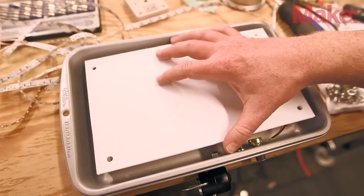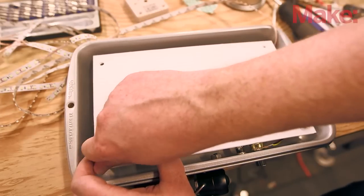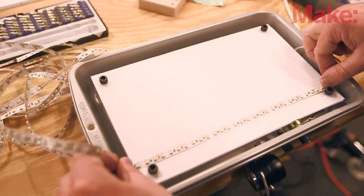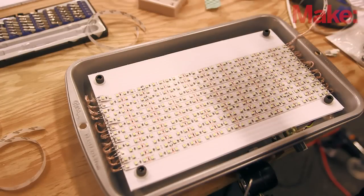Mount the corrugated panel to the top of the coupling nuts using Allen screws and washers. Then, working one strip at a time, peel away the adhesive backing on the LED strips and secure them to the panel.